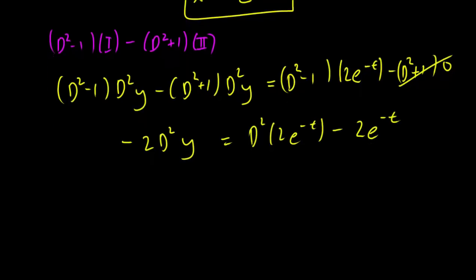So D squared 2e^(-t) is the same thing as we're just differentiating. So we differentiate that once, d/dt of 2e^(-t) minus 2e^(-t).